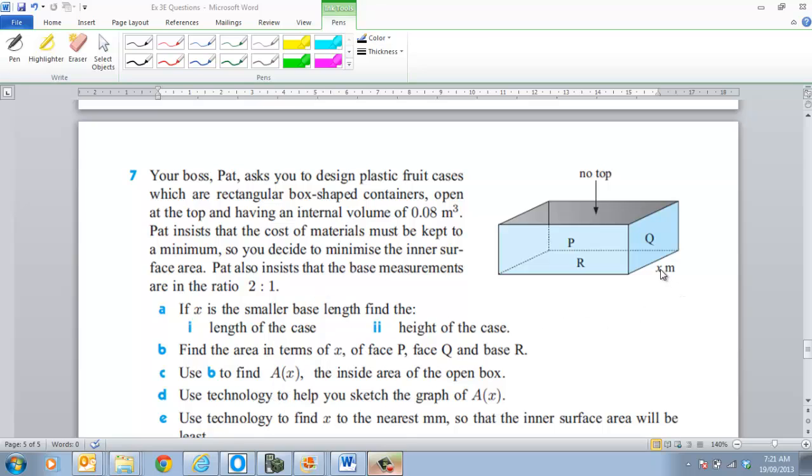Now obviously, the smaller side here is x there. So then if we look at this side over here, 2 to 1 means that this side over here has to be 2x. Alright, so that's really part A, the length of the case, the height of the case.